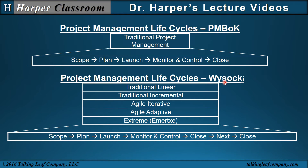In Wysocki, he takes traditional project management and defines it as linear and incremental, and then goes into agile project management and extreme project management. The lifecycle process then becomes scope, plan, launch, and then monitor, control, close — and he adds the next and close steps for agile and extreme.